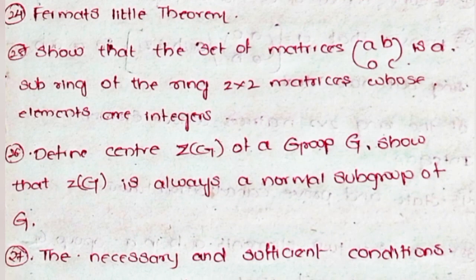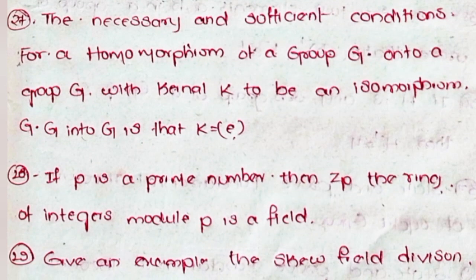Twenty-four, Fermat's Little Theorem. Twenty-five, show that the set of matrices [a b; 0 c] where a, b, c belong to Z is a subring of the ring of 2×2 matrices whose elements are integers. Twenty-six, define the center Z(G) of a group G. Show that Z(G) is always a normal subgroup of G.